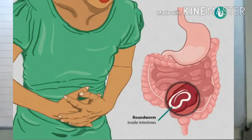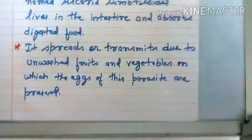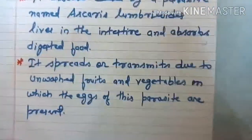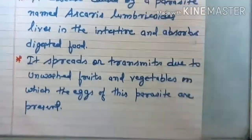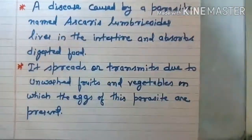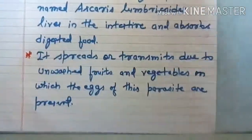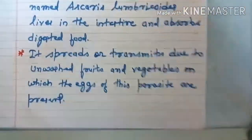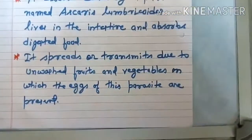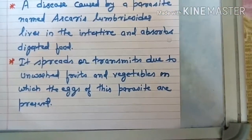Ascariasis spreads due to unwashed fruits and vegetables on which the eggs of the Ascaris lumbricoides parasite are present. If we bring fruits and vegetables from the market and do not wash them properly with fresh water before eating, this disease can occur.